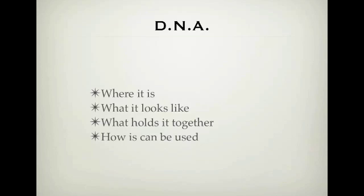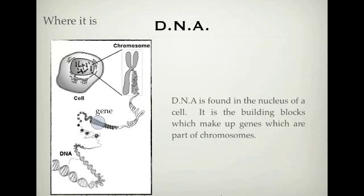So let's go have a look at where DNA is. DNA is found in the cells of plants and animals — cells of living things. Inside a cell, you have the nucleus, which is the inside of the cell, and inside the nucleus you have things called chromosomes. Chromosomes are basically your genetic makeup — they are where your genes are found. So chromosomes, if you break them into sections, they are called genes.